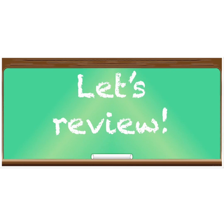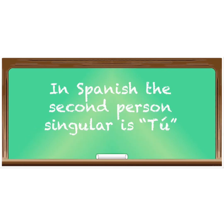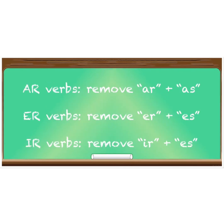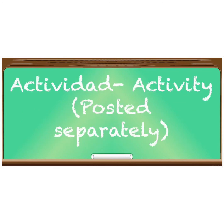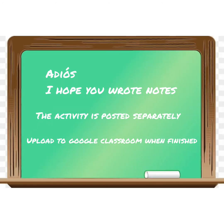Ahora vamos a repasar — let us review. In Spanish, whenever you want to say 'you run,' 'you jump,' 'you sing,' etc., we need the second person singular: 'tú' with an accent over the u. For -ar verbs, take off the -ar and add -as. For -er verbs, remove the -er and add -es. For -ir verbs, remove the -ir and add -es. Follow those steps — you have an activity to do, it will be posted separately. Adiós, students — I'm no good at goodbyes!